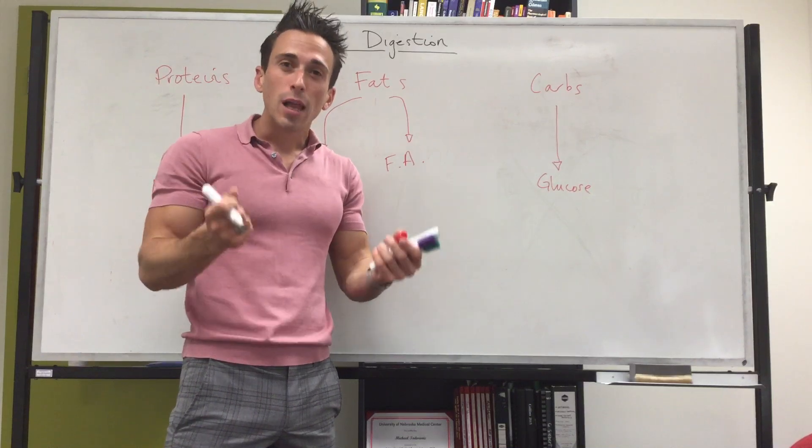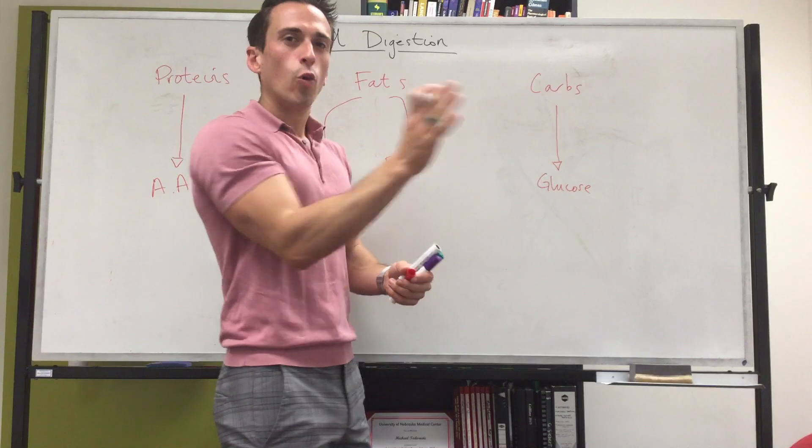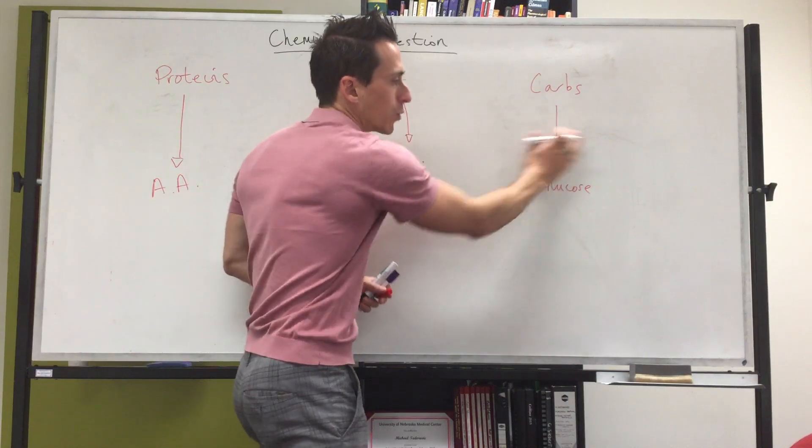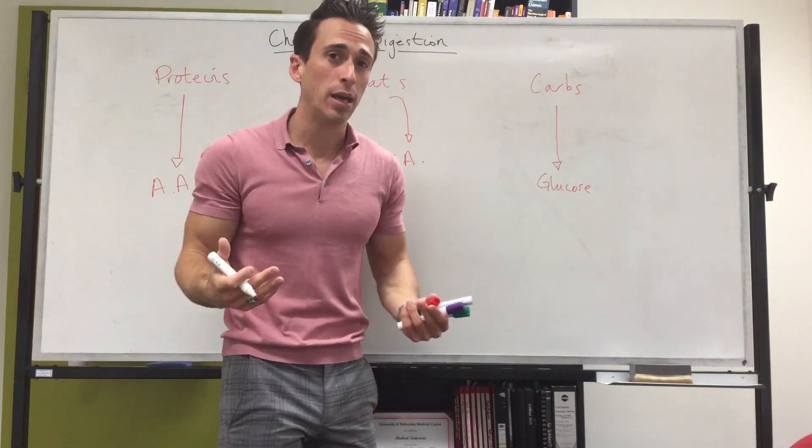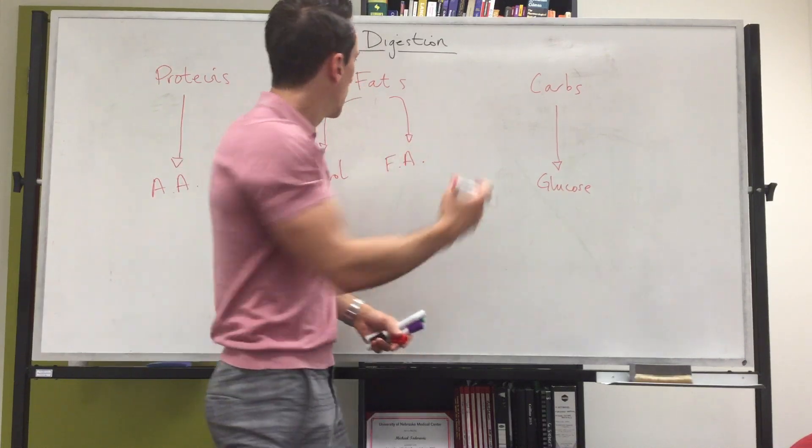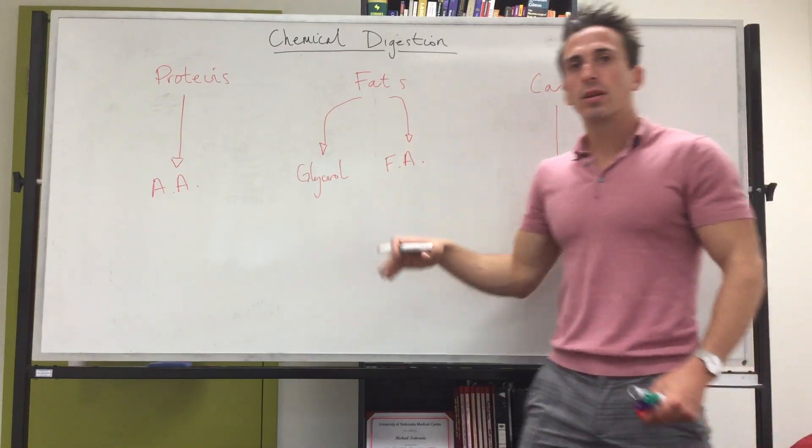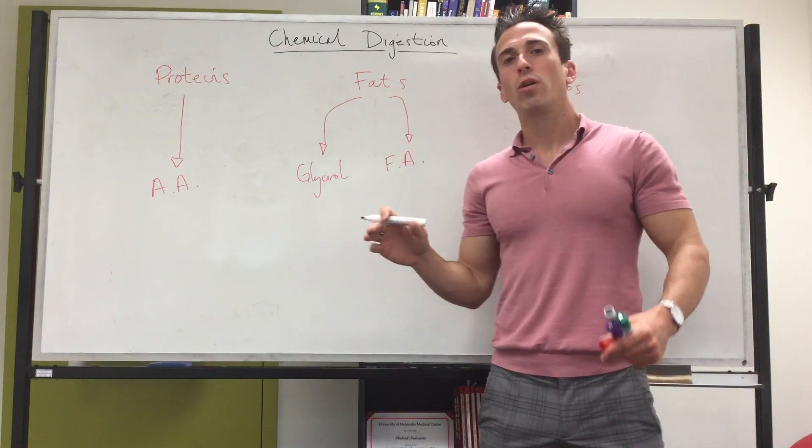When it comes to carbohydrates, we need glucose because glucose will ultimately be used to create ATP, which is the energy currency of the body that allows us to survive. Fats we break down into glycerol and fatty acids because they play a very important role in forming membranes and general structure of the body.